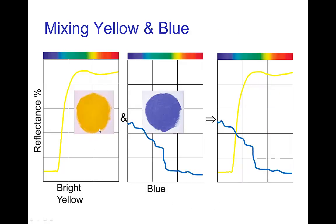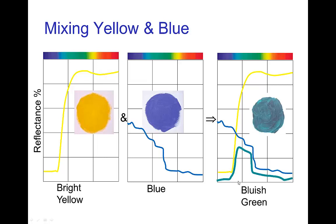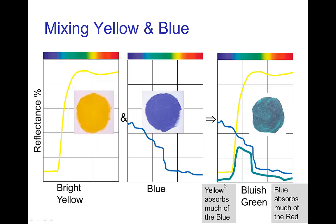To calculate the resulting color when mixing pigments, you need the spectral reflectance curve of each pigment. For yellow paint, the curve might look one way, and for blue paint, another way. When you mix the two, you look at what they have in common for reflection. The overlap in this case falls in the bluish-green region, giving a bluish-green result — because the yellow absorbs much of the blue and the blue absorbs much of the red, leaving the portion in the middle.